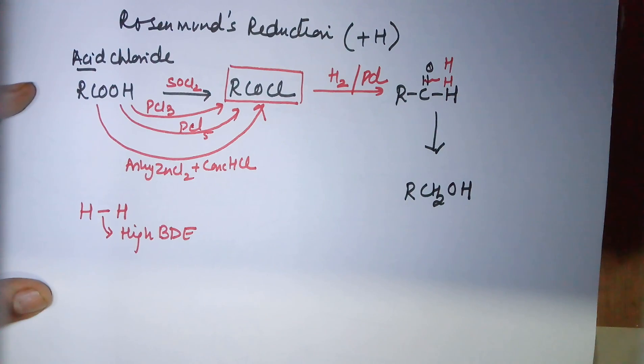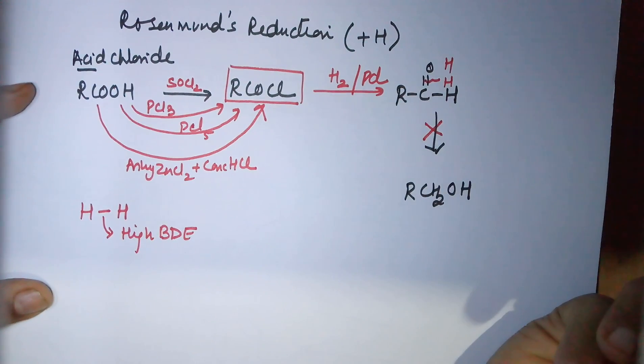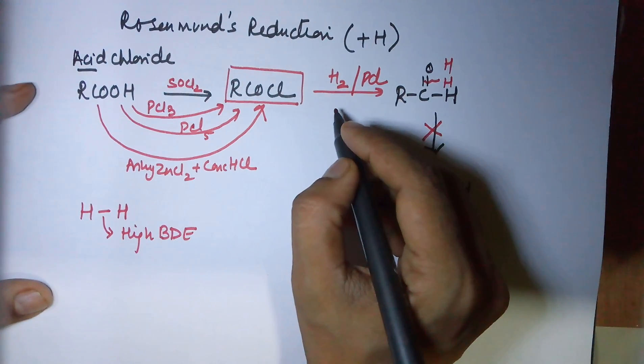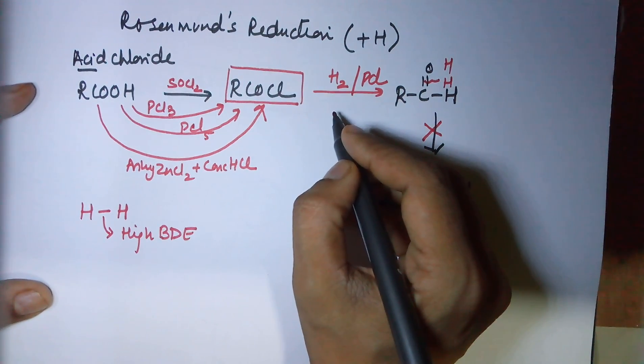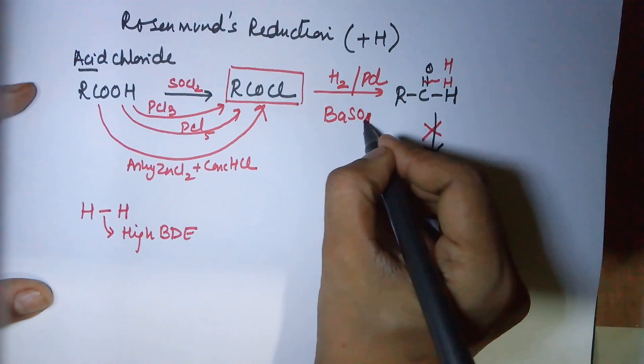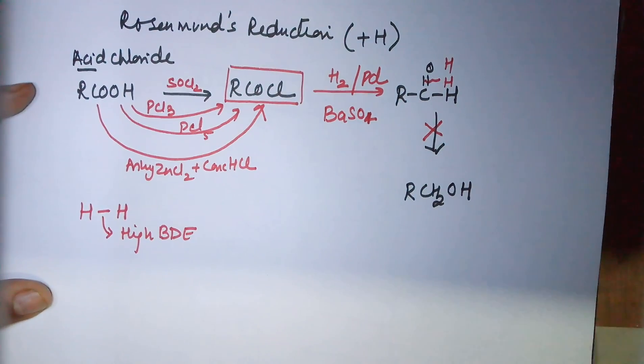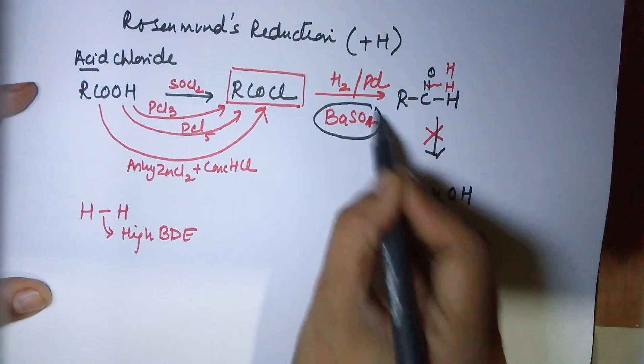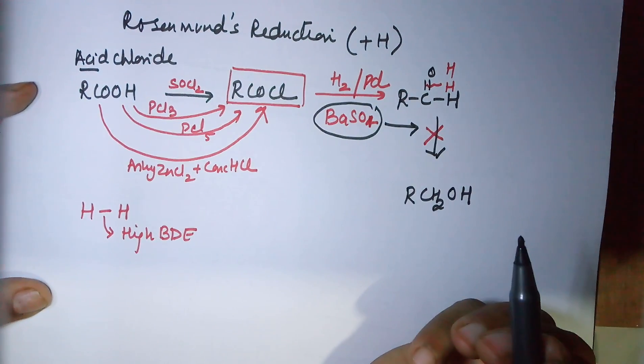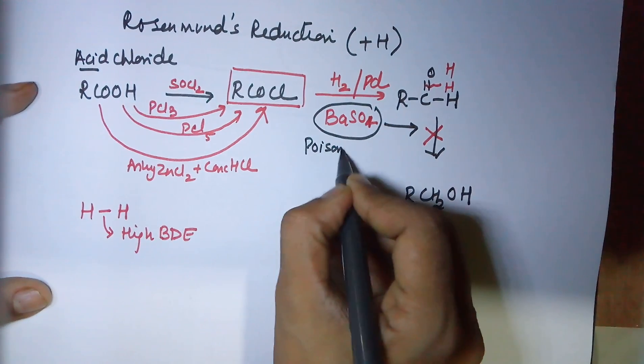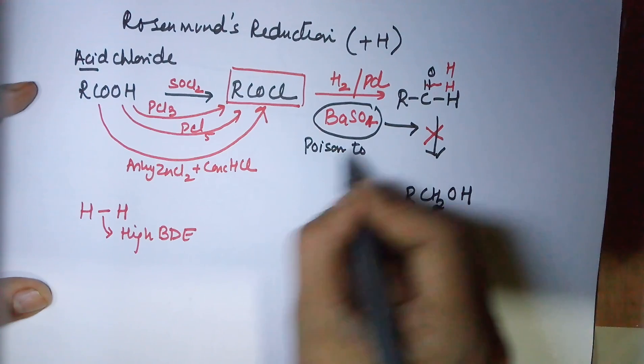But this part we do not want. The aim is not to get this reaction done. For this purpose you need to add something here, and that something is a poison to the catalyst - that is barium sulfate, or in fact any sulfur compound. The function of this barium sulfate is so that the reduction stops at the aldehyde state.